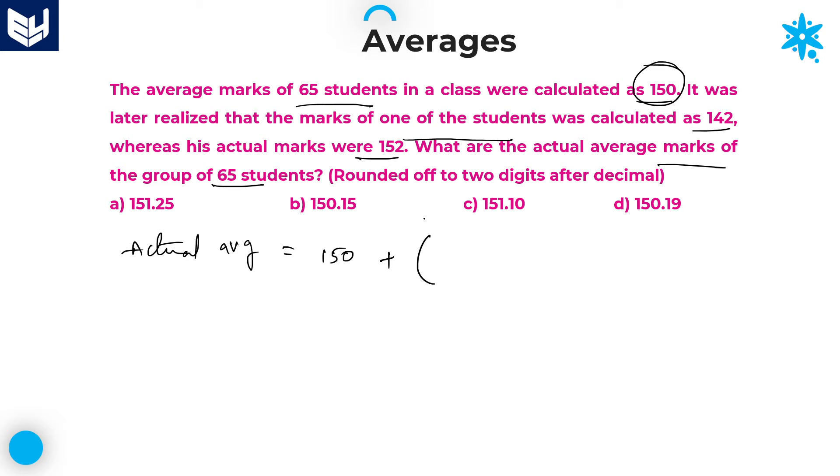Actual average equals initial average, which is 150, plus change in average. I will use positive sign for actual value. The actual marks are 152, so plus 152. And the wrong number is 142, take it as negative sign, minus 142, divided by 65 students equally. That will give you the average. This value equals 150 plus 152 minus 142, that is 10 by 65.